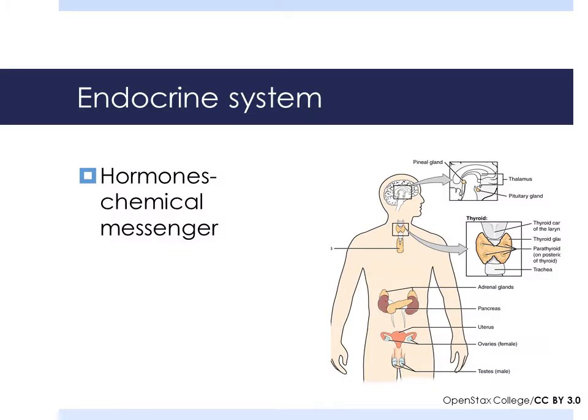The foundations of the endocrine system are the hormones and the glands. Hormones are the body's chemical messengers. They travel in the bloodstream to tissues and organs and they can affect processes like growth and development, metabolism, sexual function, reproduction, and mood.